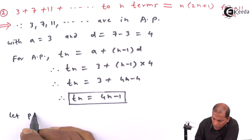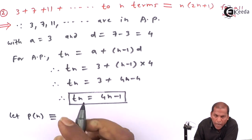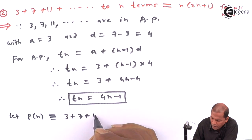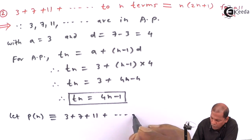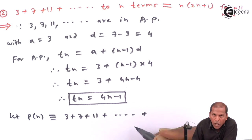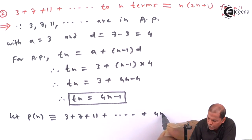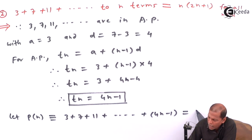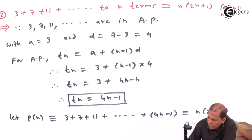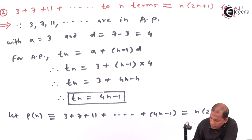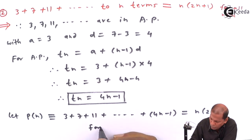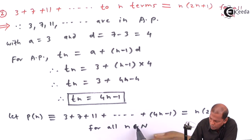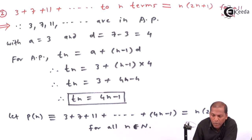So let P(n) denote: 3 plus 7 plus 11 plus ... up to n terms, where the last term is 4n minus 1, and that equals n(2n+1) for all n belonging to the set of natural numbers.